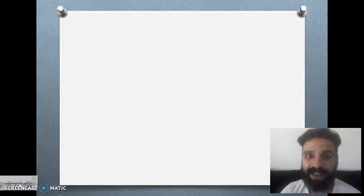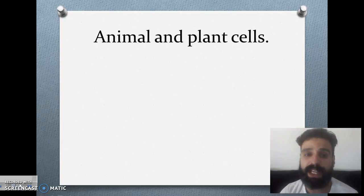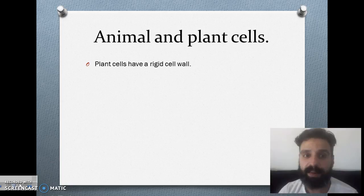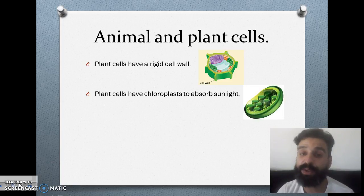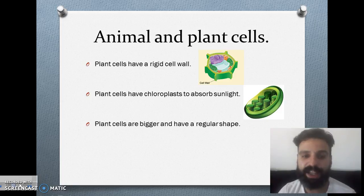And finally, we have to talk about the differences between animal and plant cells. Plant cells have a rigid cell wall. That's the reason why some plants are so rigid and hard. The second one, plant cells have chloroplasts to absorb sunlight. You know that they need sunlight in order to make their food. And finally, plant cells are bigger.